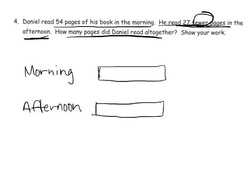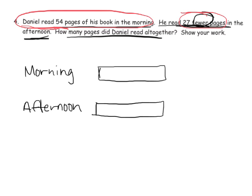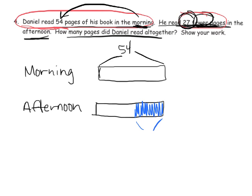Those are two bars identical in length. Now I'm going to go back and read the question more closely and figure out how to edit my bars. I might have to make one of the tape diagrams a little longer or a different one a little shorter. It says Daniel read 54 pages in the morning. Then he read 27 fewer pages in the afternoon - there's our key. So in the morning this is 54. The afternoon is 27 pages fewer, so we need to take this tape diagram and make it shorter by 27.